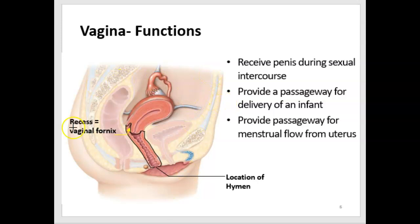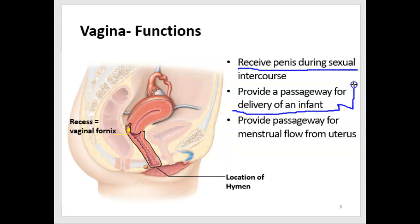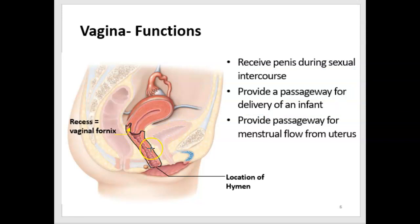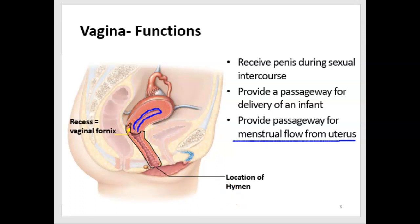Let's look at the functions of the vagina. The primary function is to receive the penis during sexual intercourse. If pregnancy occurs, the vagina also provides a passageway for the infant, requiring significant stretch. In addition, the vagina allows menstrual flow to pass from the uterus to the outside of the body. The menstrual flow is a shedding of the highly vascular lining of the uterus, so we see a lot of blood released that flows through the vagina.